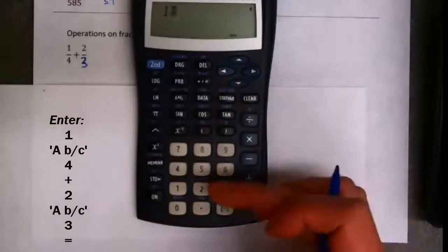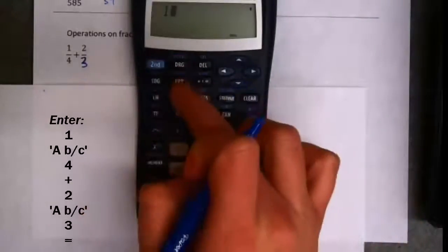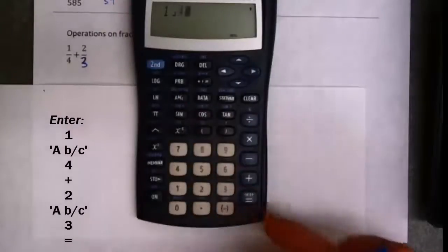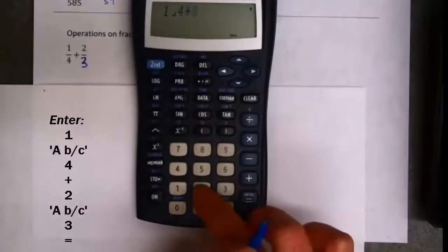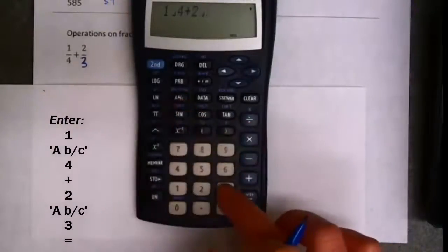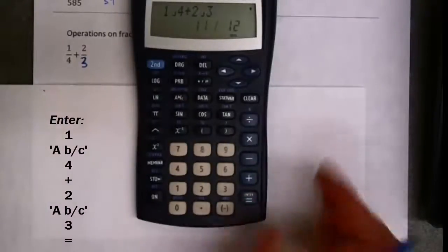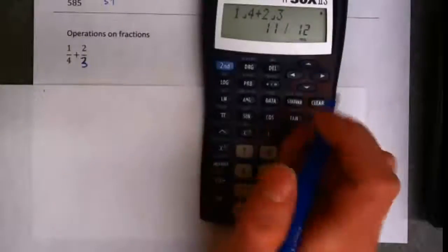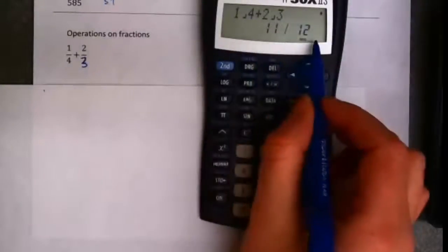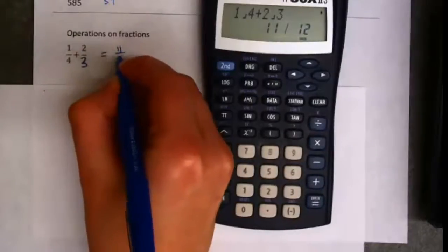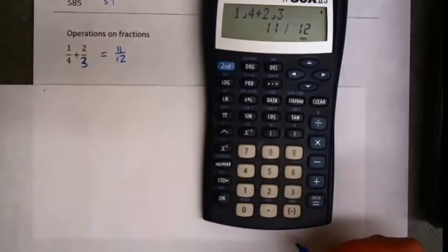I can literally type that into my calculator. 1 4th, I'll hit 1, my ABC button there, 4th, plus 2, hit my fraction button, 3rds. So the calculator figures out the common denominator, adds it for me, and puts this in lowest terms. So no more arithmetic mistakes.